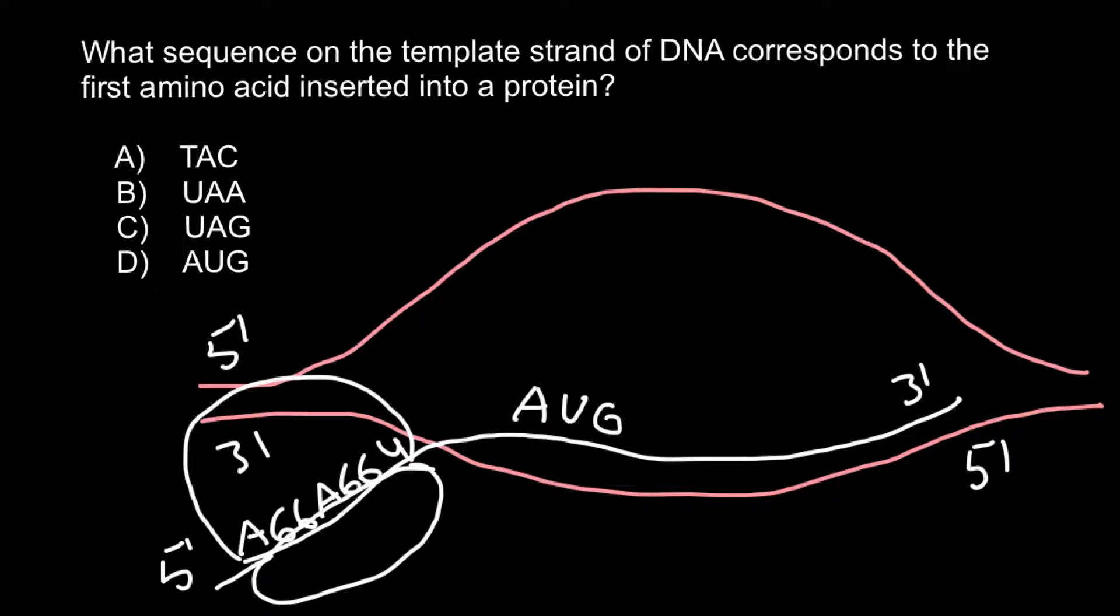So now we can solve our problem. If we have AUG on our messenger RNA, then on the template strand of the DNA we will have corresponding bases as follows: adenine would pair with thymine, uracil would pair with adenine, and guanine would pair with cytosine.